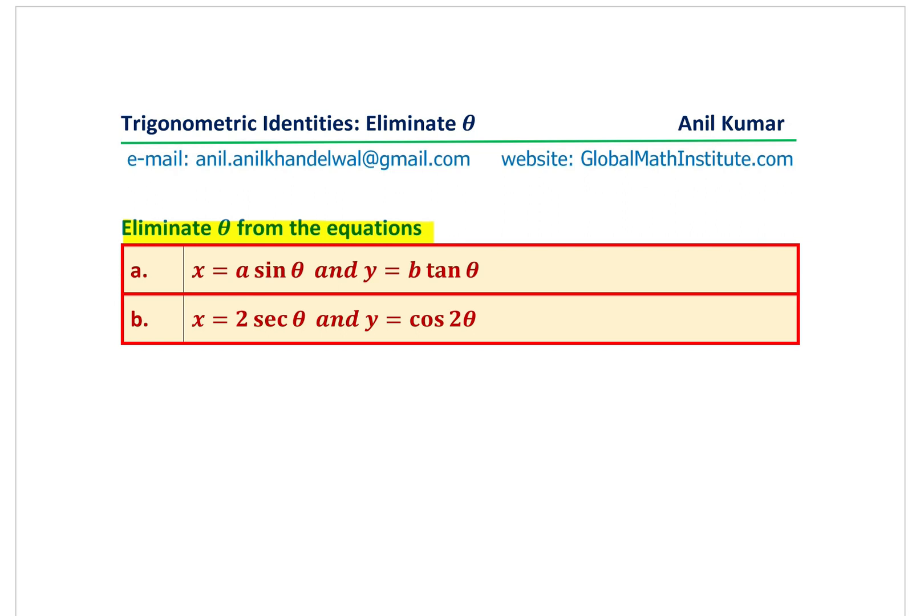So in these questions, you will find x is equals to a sine theta, y equals to b tan theta. Using these two equations, we have to eliminate theta. Similarly, in the second question, we have x = 2 secant theta, y equals to cos 2 theta. We need to eliminate theta.